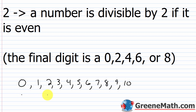A number is divisible by 2 if it is even. A number is even if the final digit is a 0, 2, 4, 6, or 8. If you look at 0, 2, 4, 6, 8, and 10 — those are the even numbers. The others — 1, 3, 5, 7, and 9 — are called odd numbers. They alternate: even, odd, even, odd, forever. So for divisibility by 2, look at the final digit — if it's 0, 2, 4, 6, or 8, it is divisible by 2.